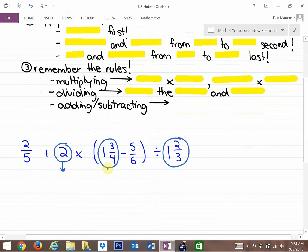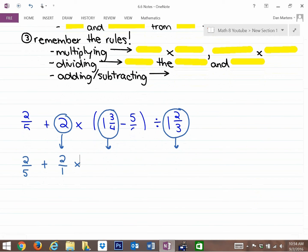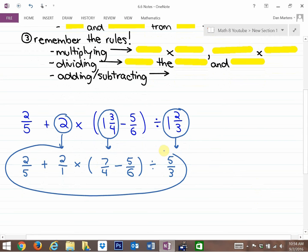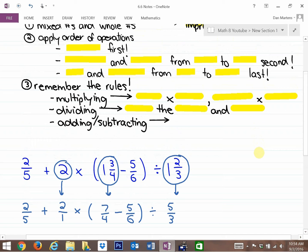You'll see me working down the page, and it's valuable to pause this and try it on your own. We learn best in mathematics by making mistakes. So 2 becomes 2 over 1. 1 and 3/4 is 1 times 4 plus 3, so that's 7/4. 5/6 is a proper fraction, leave that alone. And 1 and 2/3 becomes 5/3. That's the first step when dealing with fractions.